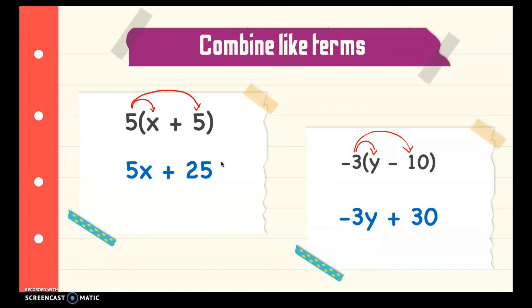So why do we need to combine like terms, and how do we apply that in real life? It is necessary to combine same items or things together so that we can deal with a shorter list of items. For example, if you are buying food for takeout and you ask your family members their orders, it would be easy to summarize: how many drinks, fries, and burgers in total. That's about it — I hope that you learned something from our lesson about combining like terms.